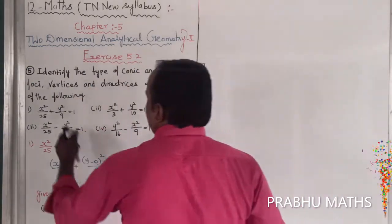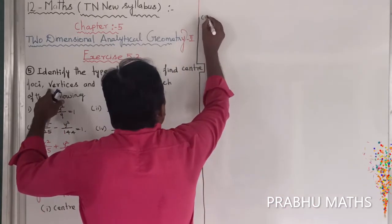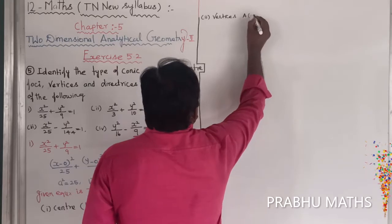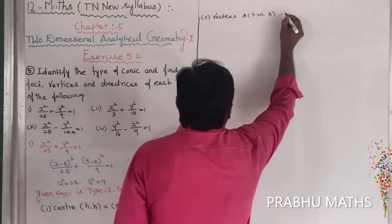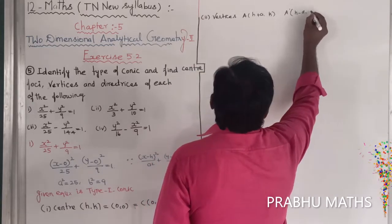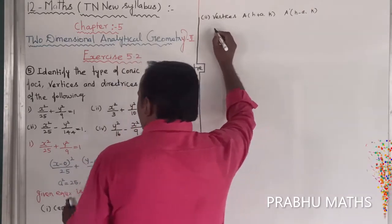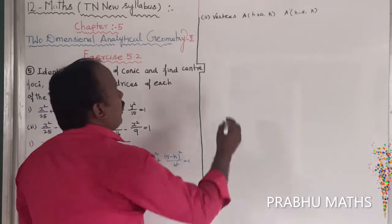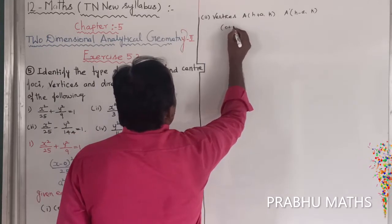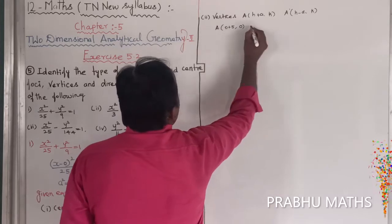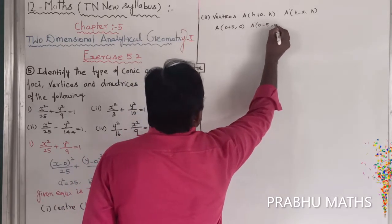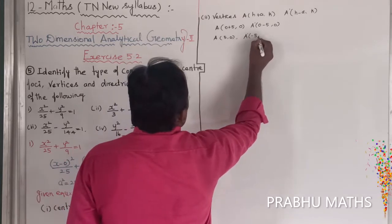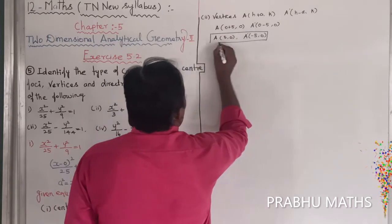Second, to find the vertices. The vertices are formed as A = (h + a, k) and A' = (h − a, k). Since a squared equals 25, a equals 5, and b equals 3. With h equals 0: vertex A = (0 + 5, 0) = (5, 0), and vertex A' = (0 − 5, 0) = (−5, 0). So the vertices are completed.